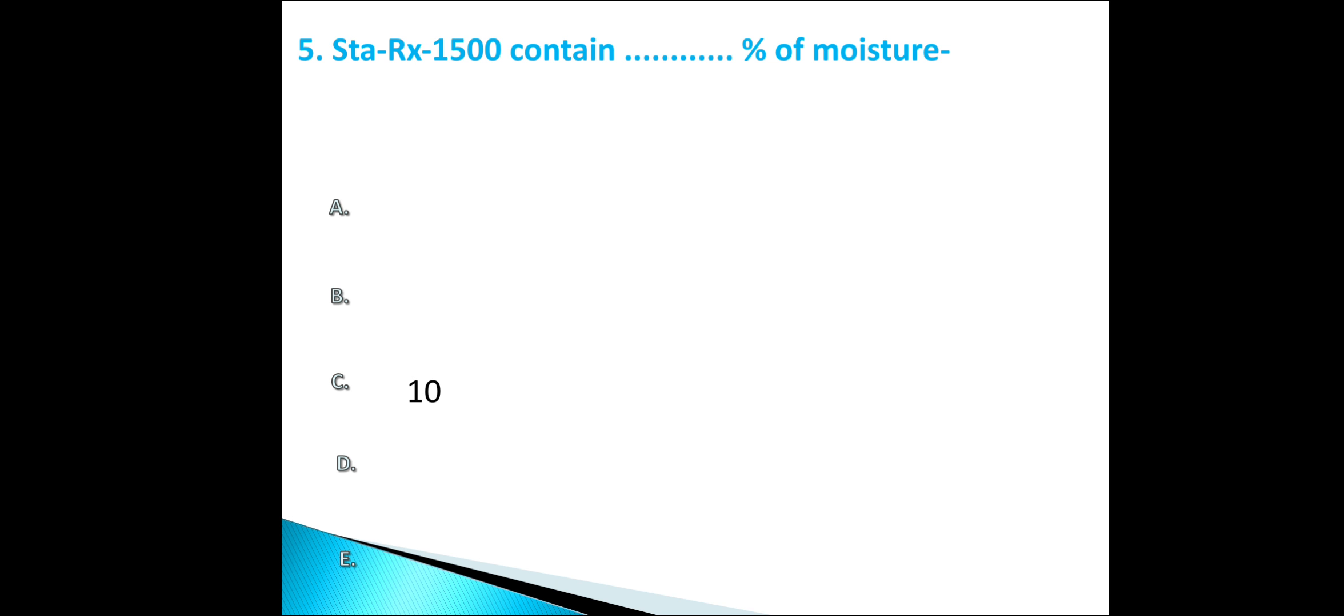Moving on to question number 6. Modified starch is: Starch 1000, Starch 200, Starch 1200, Starch 1500. It is also a database question. And the correct option is Starch 1500.